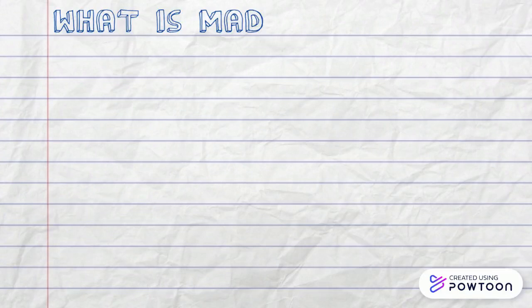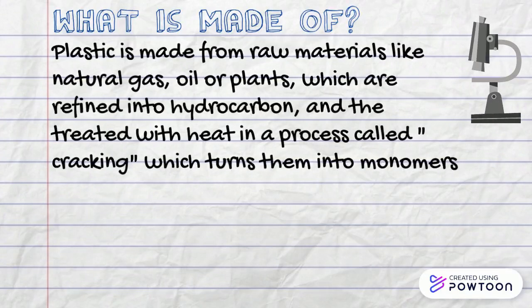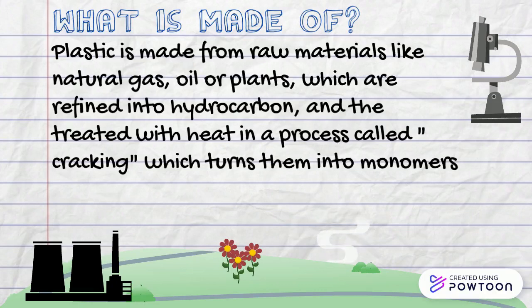Plastics are made from raw materials like natural gas and oil, which are refined into hydrocarbons and then treated with heat in a process called cracking, which turns them into monomers — for example, ethylene and propylene. These materials are combined together to create different polymers, which are then fed into an extruder where they are melted and formed into plastic.